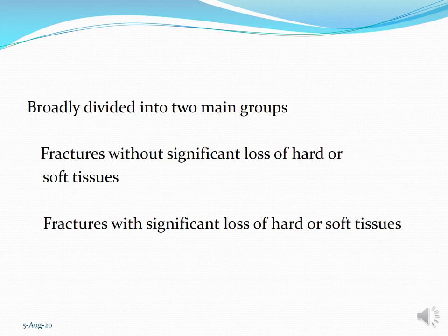Fractures are broadly divided into two groups: fractures without significant loss of hard and soft tissues, and fractures with significant loss of hard and soft tissues — denoting the extensivity of the fracture. Those fractures within the scope of general dental practitioners are those without significant tissue loss. When there is associated significant loss of hard and soft tissues, treatment needs hospitalization, whereas simpler cases can be treated in the dental clinic as an outpatient procedure.